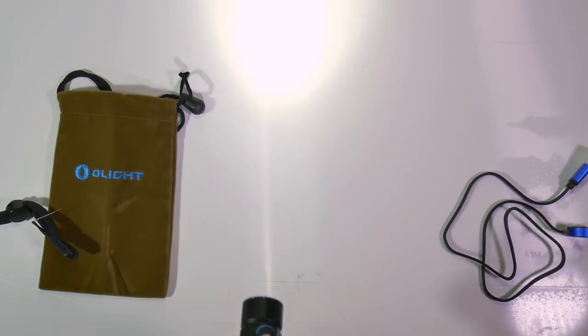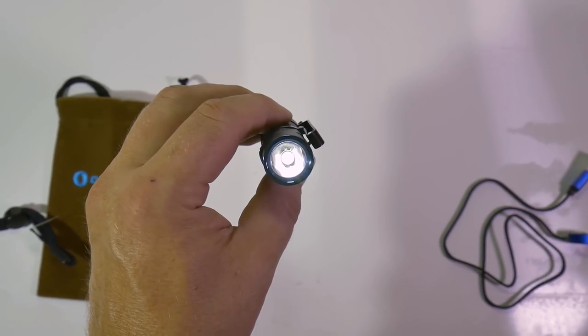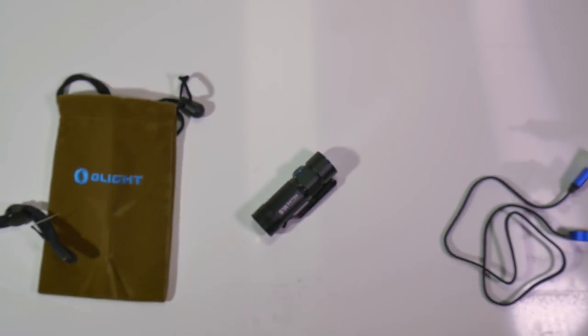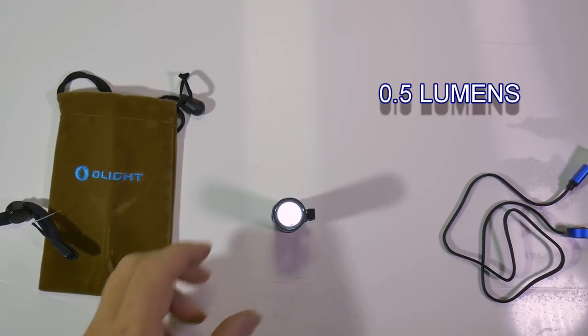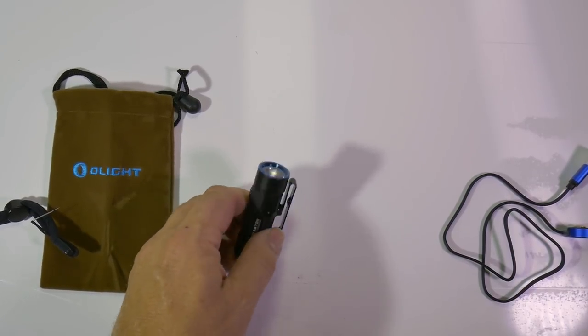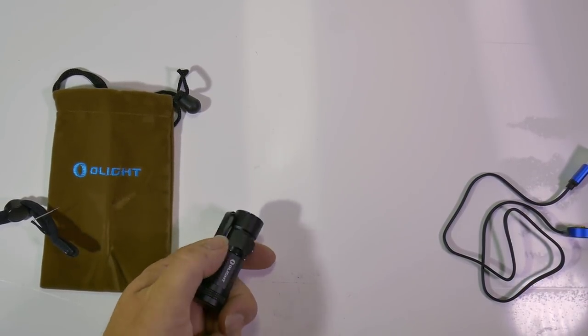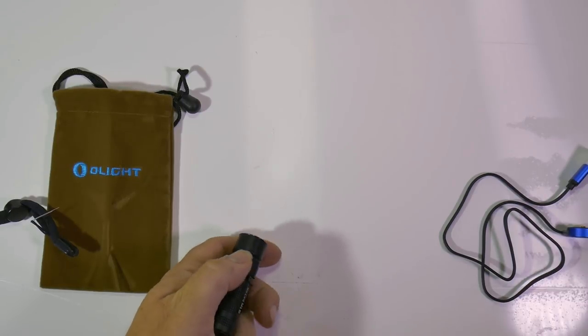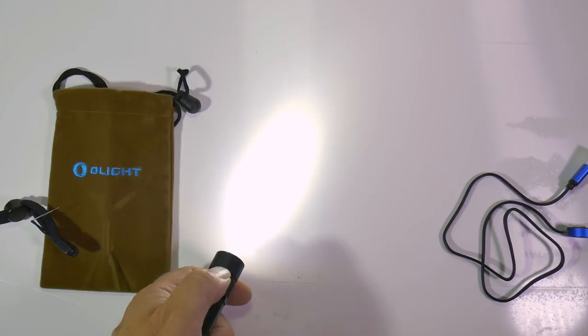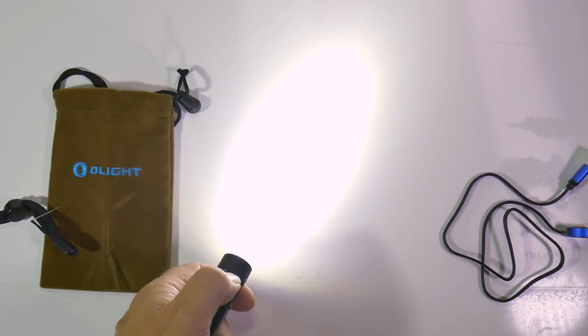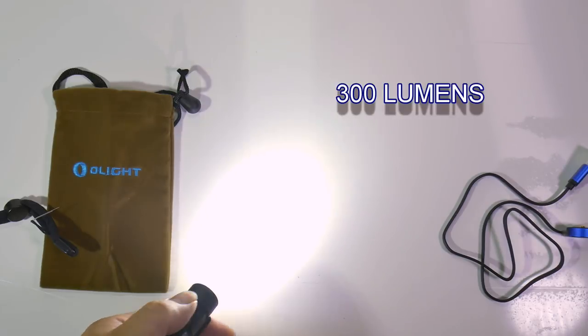I've already charged it up. First of all we've got our moonlight setting which is - that's the moonlight setting - which you can see there, that's 0.5 lumens. Then we go up to our next one which is 12 lumens, then we go up to our next one which is 60 lumens, then our next one which is 300.